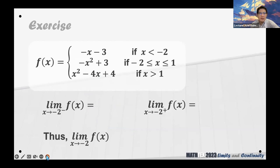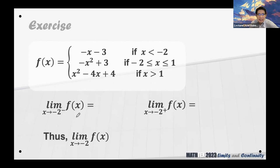Let's start with the first one — the limit from the left of negative 2. Which of the three conditions do we need? There are only three conditions: x less than negative 2, x between negative 2 and 1, and x greater than 1. For the limit from the left of negative 2, definitely the first condition is what we need.